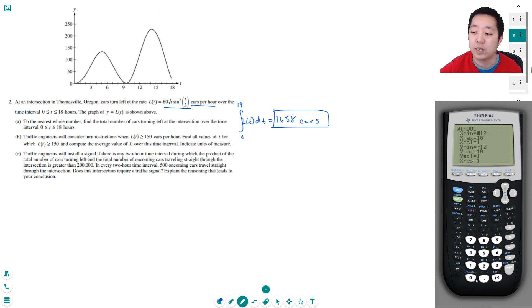Let's do a window like here. X goes from 0 to 18. Y is going from 0 to about 250. We'll make the x scale, we'll make it 2. The y, let's see, 0 to 250. The y scale we'll do like 50, like they have on here.